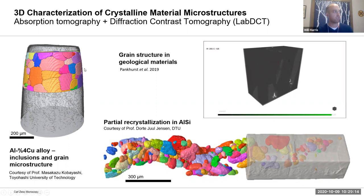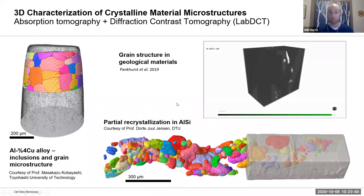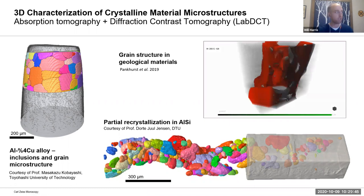If you collect those diffraction signals, you can backtrack them spatially to where they originated from within your sample and gain a picture of the three-dimensional grain structure that was producing all those diffraction spots — mapping out 3D grain location, morphology, and orientation. If you're familiar with EBSD, you can think of this as a kind of 3D EBSD in a non-destructive sense, though it's not a perfect analogy.